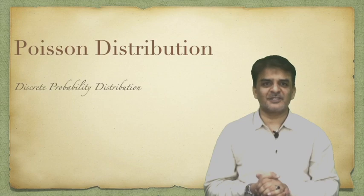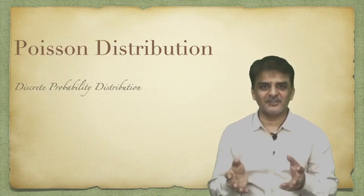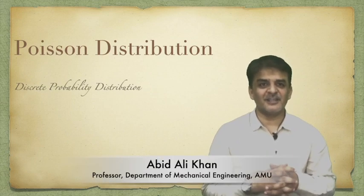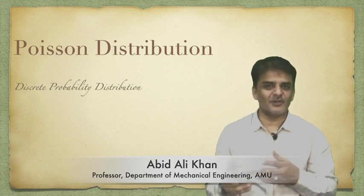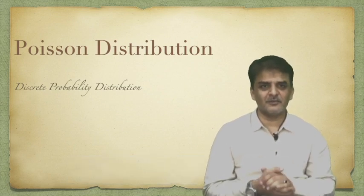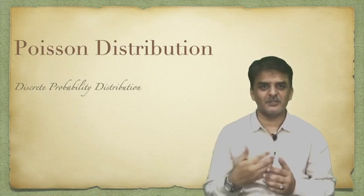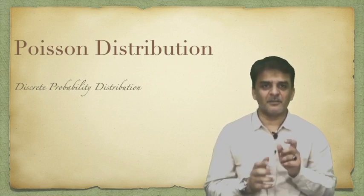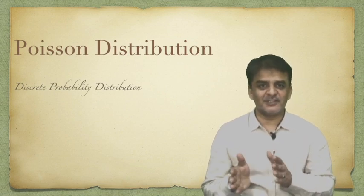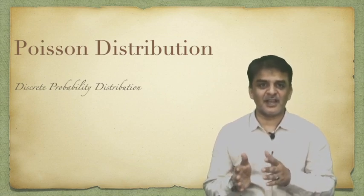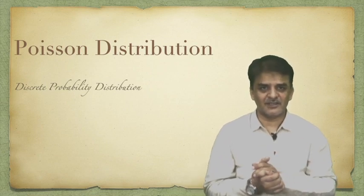Today I want to discuss the Poisson distribution, a very important distribution in the category of discrete probability distributions. All these discrete probability distributions, like binomial distribution and hypergeometric distribution, are based on discrete random occurrences. Poisson distribution is a kind of distribution where one occurrence is not related to the other occurrence.